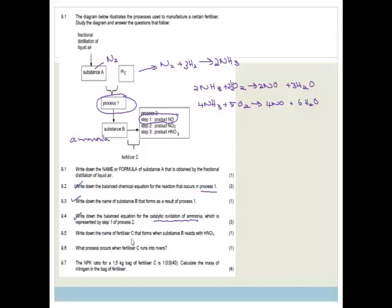Now it says write down the name of the fertilizer C that is formed when substance B reacts with nitric acid. So we've got ammonia plus nitric acid, and it's going to form ammonium nitrate. Ammonium nitrate. There we go.